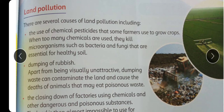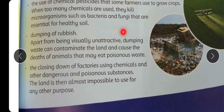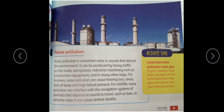Gharon ka jo kuda-kirkut hai wo zameen ke andar daba dete hain — yeh bhi nuksan deh hai. Apart from being visually unattractive, dumping waste can contaminate the land and cause the deaths of animals that may eat poisonous waste. The closing down of factories using chemicals and other dangerous and poisonous substances — jab factory close karte hain wo jo chemicals hain zameen ke andar de dete hain — the land is then almost impossible to use for any other purpose.